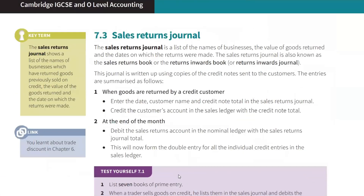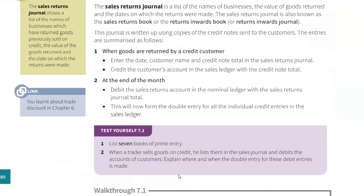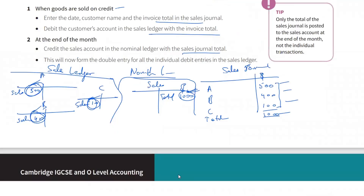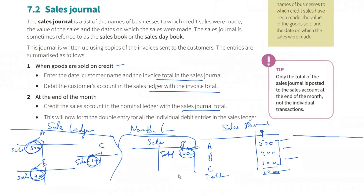The sales returns journal follows a very similar idea. In this case, the individual entries will be credited in their accounts. These are your receivables — A, B, C. When they return goods, we make a sales returns journal. The individual entries will be credited; your receivables are going down, so we credit those accounts. At the end of the month, the total is debited to the sales returns account.